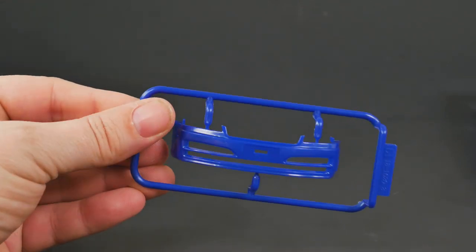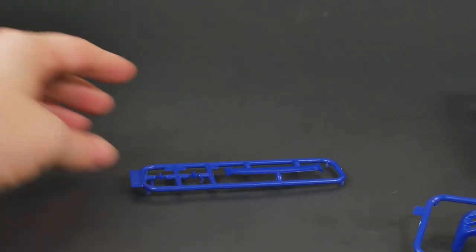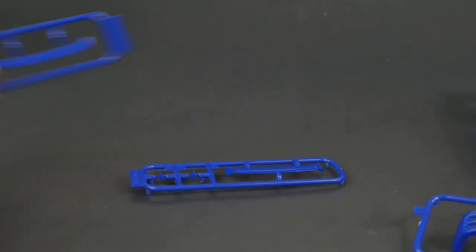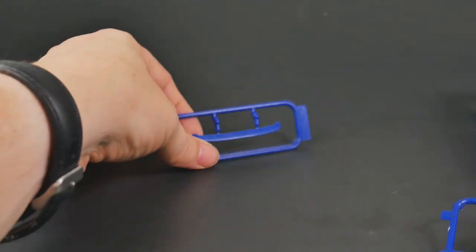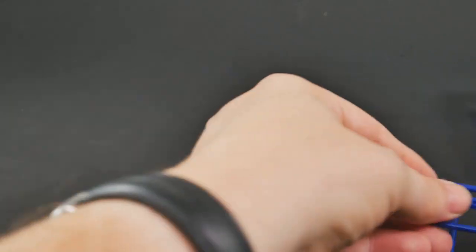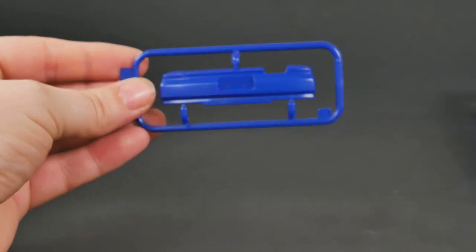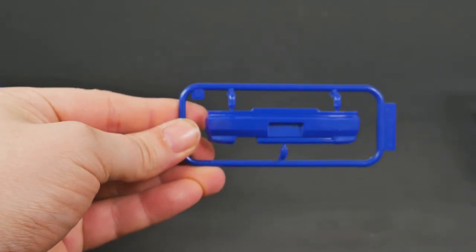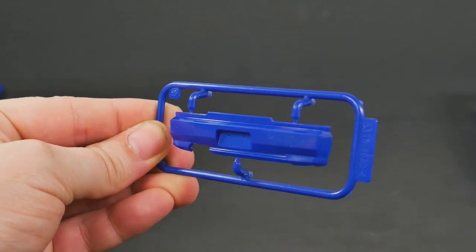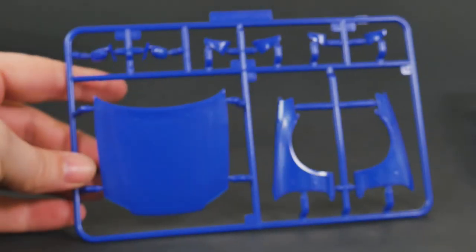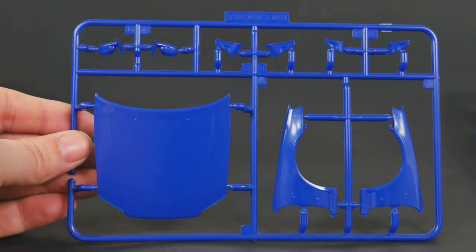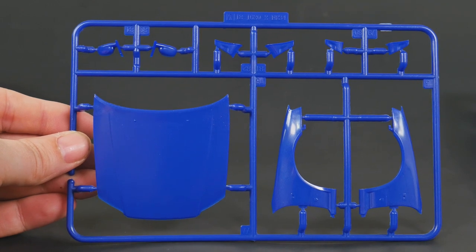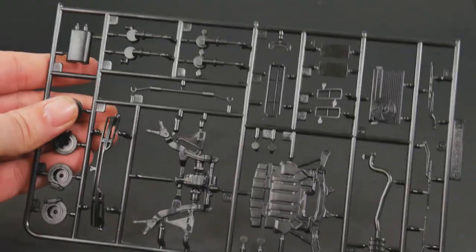So you have the separate front bumper. You have a couple of choices of deck spoilers, your choice A and choice B there. You have the rear bumper cover there. And the parts tree that has the rest of the front clip, your hood, and the front fenders, and some other bits as well. Taking a look at the first of the parts trees.